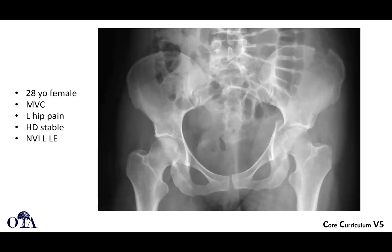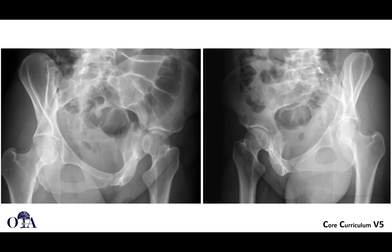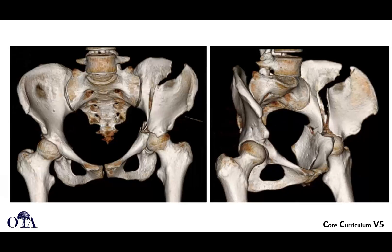Let's go through an example. Here's a 28-year-old female with a motor vehicle crash and left hip pain. You can see there's an acetabulum fracture; the patient is hemodynamically stable. Going through the imaging, you can see disruption of the ilioischial line and iliopectineal line, with perhaps more displacement seen posteriorly.